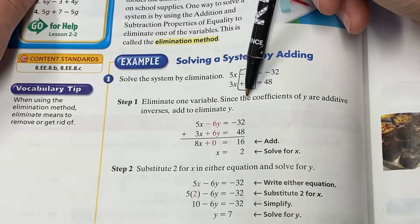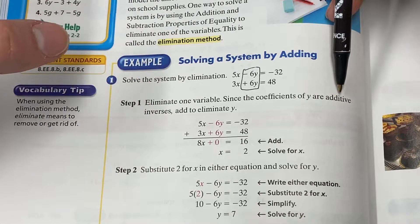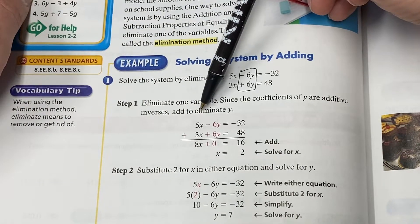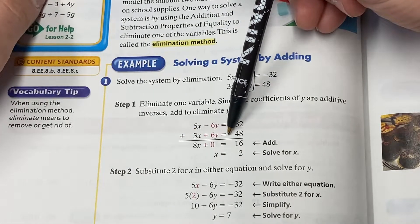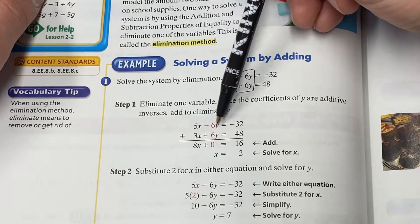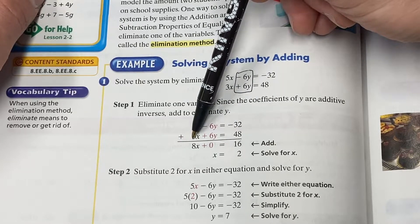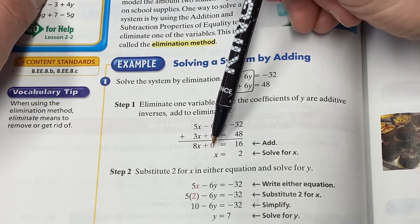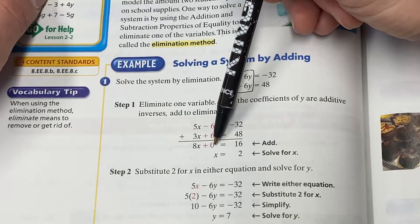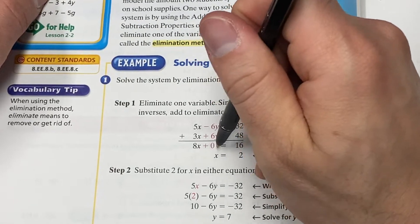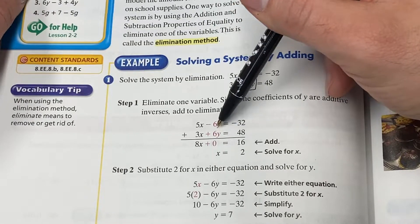That's exactly what it says here. If you read step one, since the coefficients - that's the numbers in front of Y - are additive inverses, they're opposites, you can add these two equations to eliminate the Y. That's exactly what they do here, but you have to do that to everything. We are adding the whole first equation to the entire second equation.